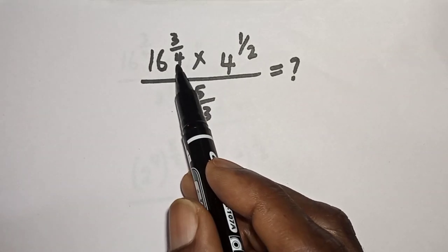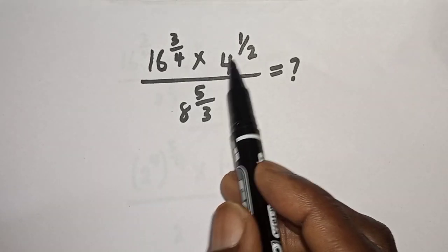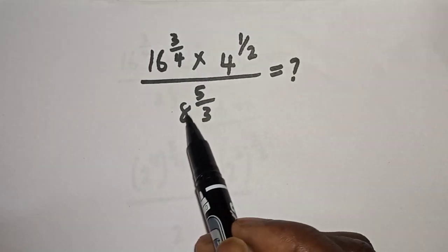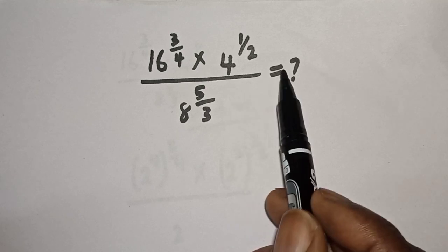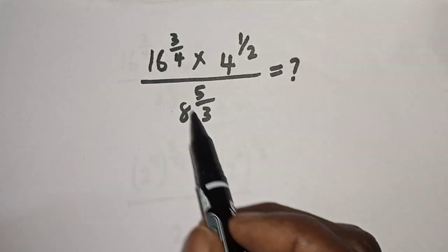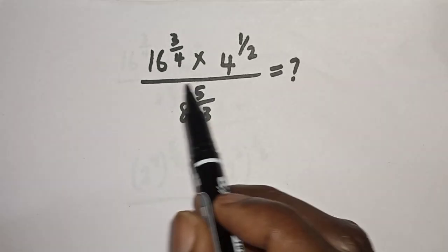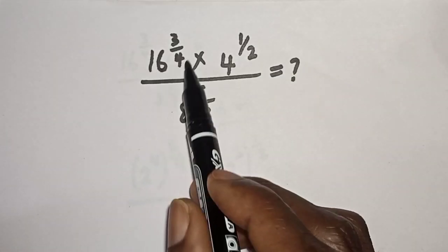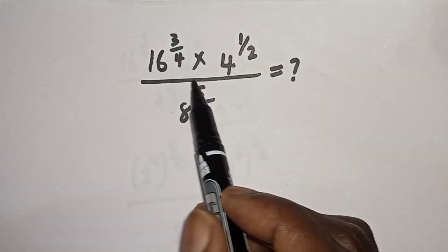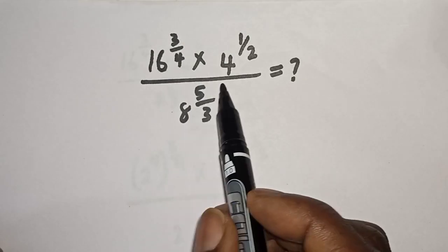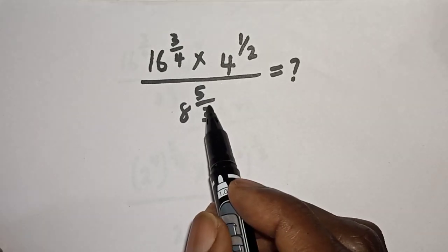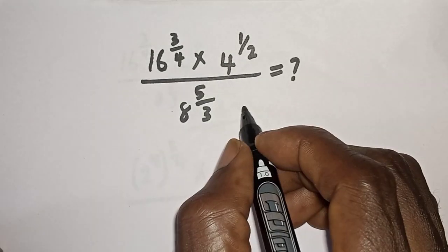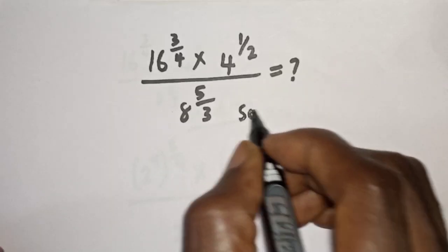16 raised to power 3 over 4, multiplied by 4 raised to power 1 over 2, divided by 8 raised to power 5 over 3 — is equal to what? Hi everyone, welcome to my class. In this class we want to evaluate this math problem. Before we proceed, please don't forget to like, share, comment, and subscribe.